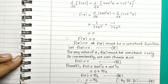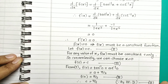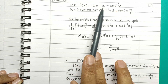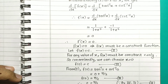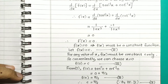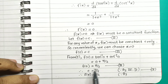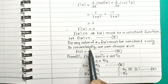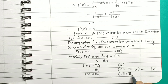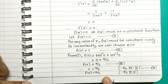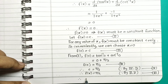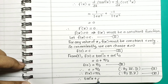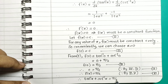Since f of x equals c and c equals pi by 2, and f of x is tan inverse x plus cot inverse of x, we get f of x is equal to pi by 2 — from equations 2 and 5, call this equation 6. And from equations 1 and 6, tan inverse of x plus cot inverse of x is equal to pi by 2. Hence we have proved the property using the concept of derivative.